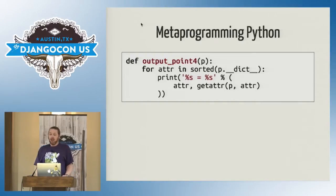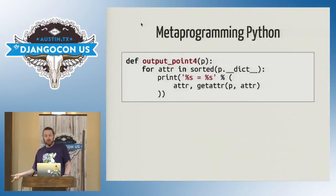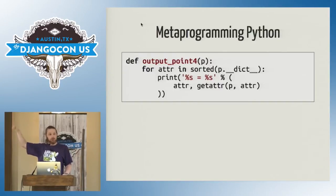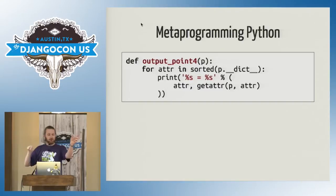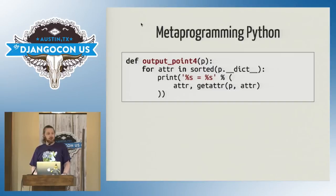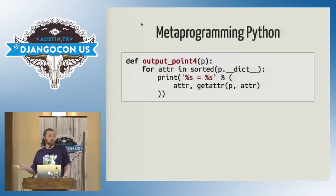Every Python object has a special attribute named dunder dict that contains all the attributes of that instance. So p.__dict__ gives all the attributes of that instance. We sort those and iterate over them. For each one, we print out the name of the attribute and get its value off the object p. The interesting thing is that definition will work with any object, not just points. You can point any Python object at that method, and as long as the attribute can be output as a string, it will successfully output a representation of that object.